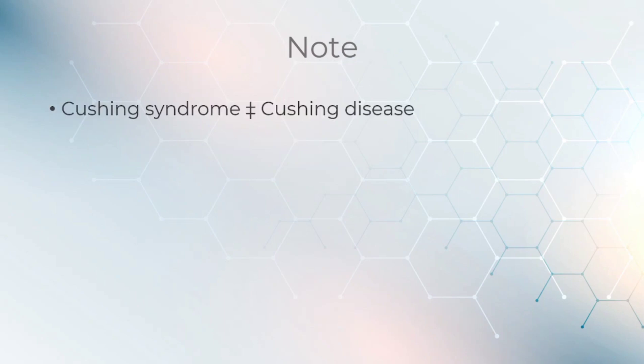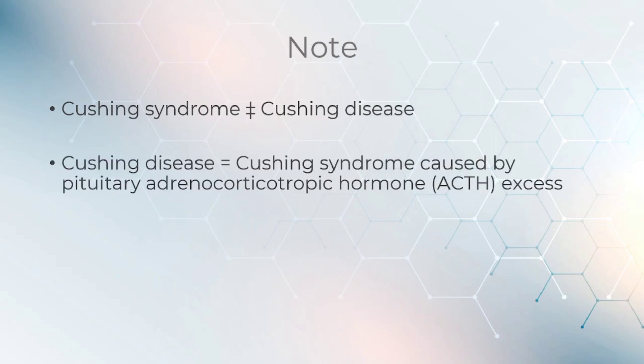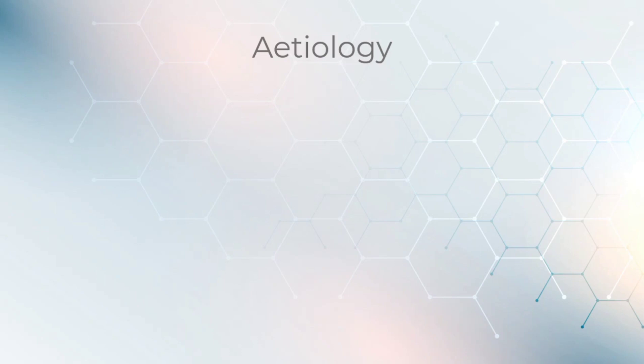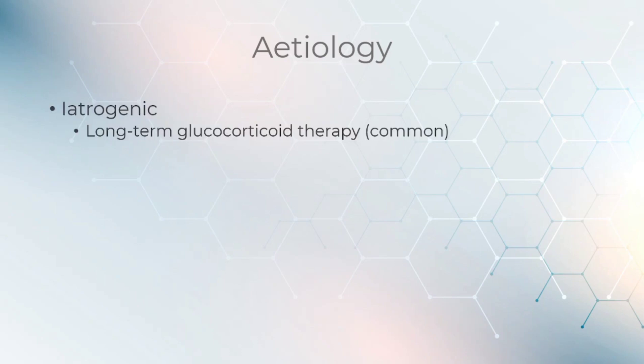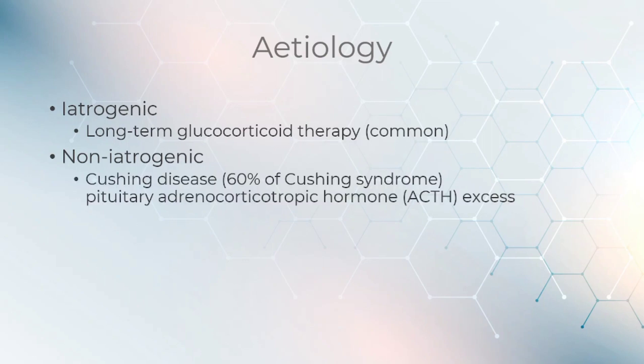Take note that Cushing syndrome is not the same thing as Cushing disease. Cushing disease is Cushing syndrome caused by pituitary adrenocorticotropic hormone excess. Cushing syndrome may occur iatrogenic due to long-term glucocorticoid therapy, which is rather common, or non-iatrogenic, such as Cushing's disease, which makes up up to 60% of Cushing syndrome.